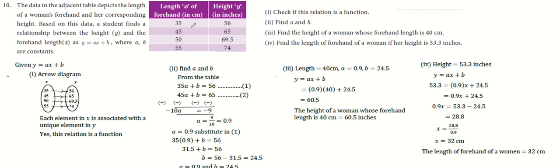First, the length of forehand is 35 and height is 56, 45 is 65, 55 is 69.5, 55 is 74.